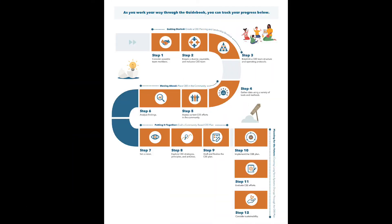There are 12 steps in all that cover areas of building a community team, analyzing the community context, developing an implementation plan, and planning for sustainability.